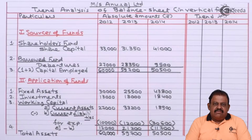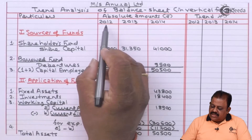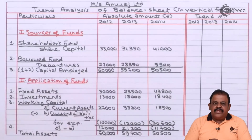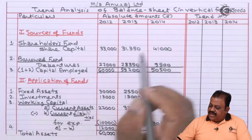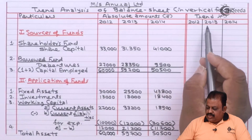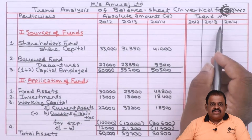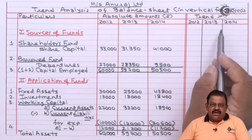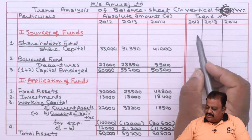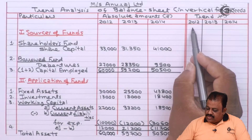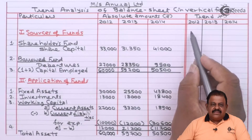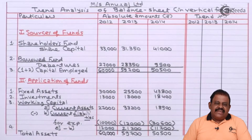Now we can prepare the trend part of the solution. The base year here is 2012, so when we put values in the trend percentage part, for 2012 as the base year we take all figures as 100.